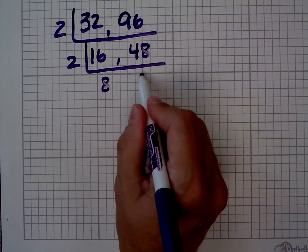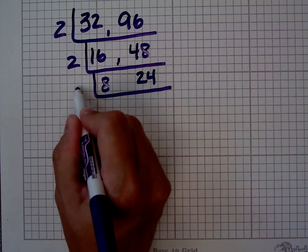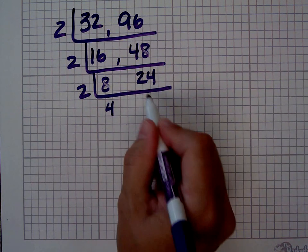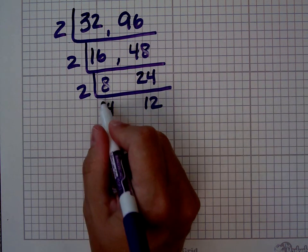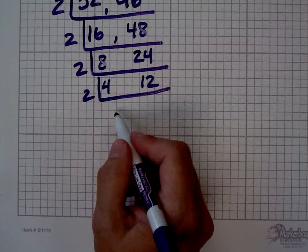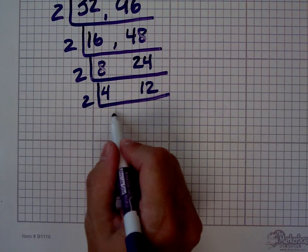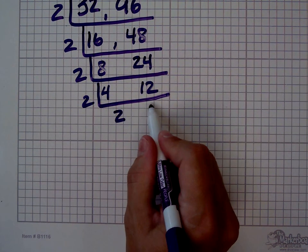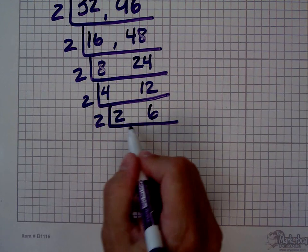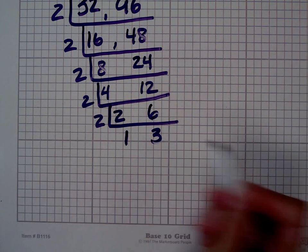Sixteen divided by two is eight. Forty-eight divided by two is twenty-four. Even again — take out another one. Eight divided by two is four. Twenty-four divided by two is twelve. We're still even. Four divided by two is two. Twelve divided by two is six. Still even — I'm on a roll here. Two divided by two is one. Six divided by two is three. I think I have to stop there.